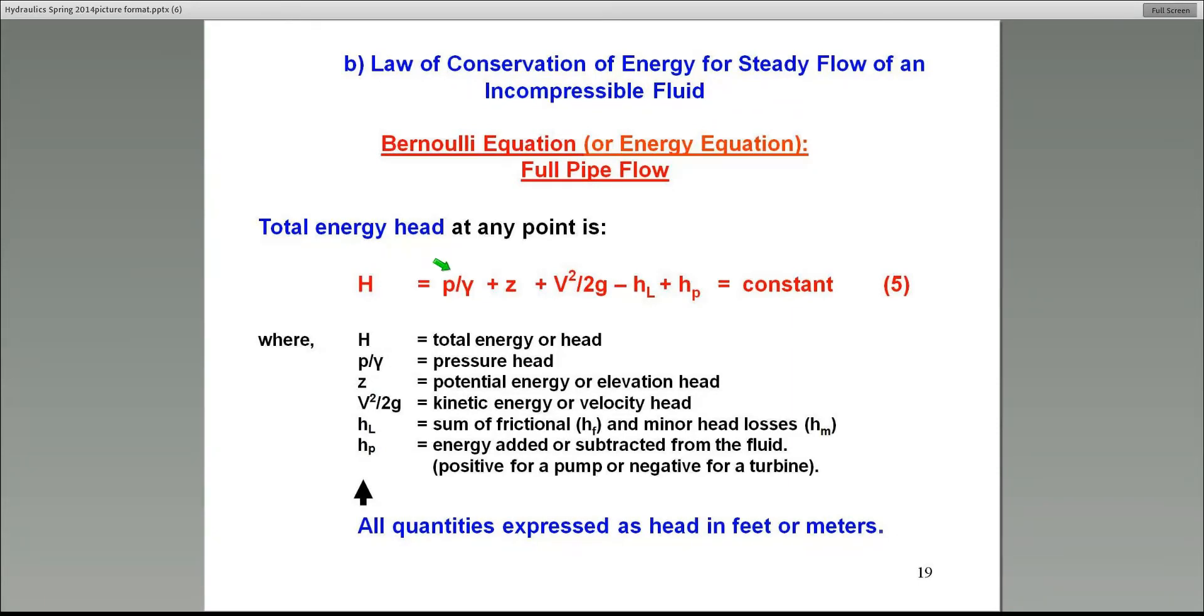The first term is called P over gamma. We often refer to it as pressure head. Now notice the word I'm using, head, and I'll explain that in a minute, what that means. The second term is a potential energy term, or basically it is the energy the fluid possesses by virtue of its elevation above our datum. And then, of course, V squared over 2G is what we call the kinetic energy or velocity head. So basically the first two terms represent like potential energy and pressure energy together. And finally, the third term represents the kinetic energy term.